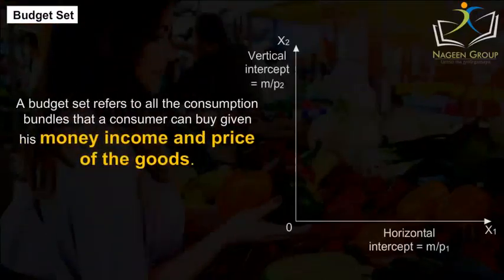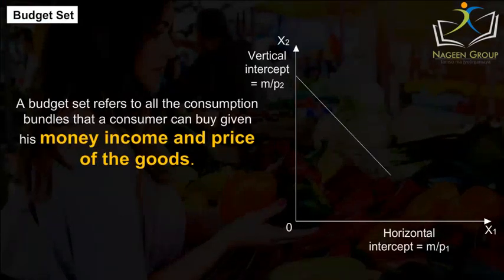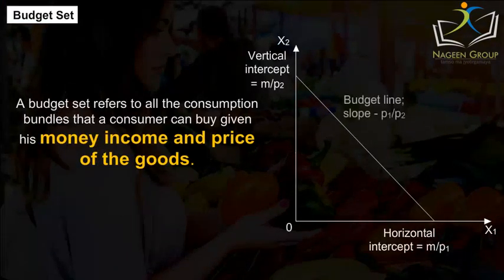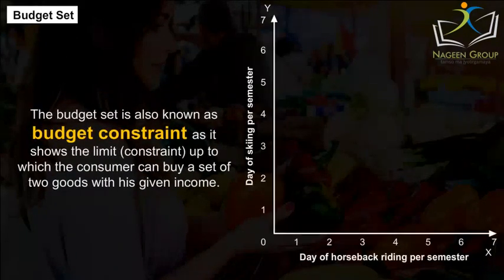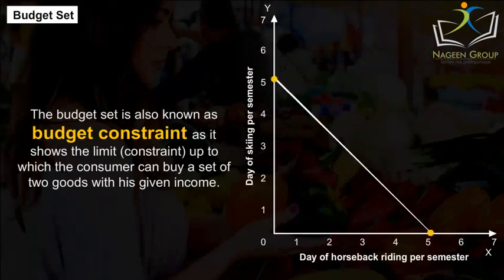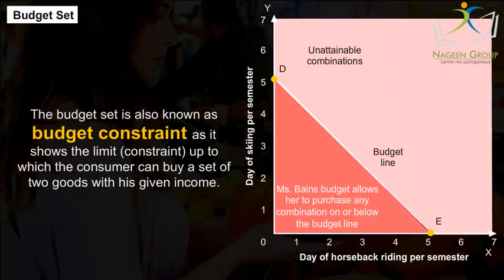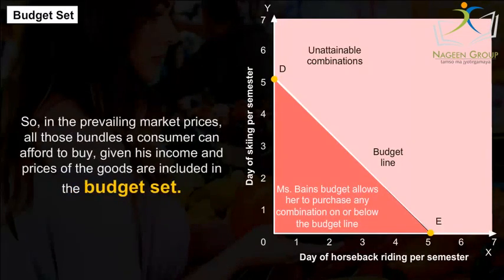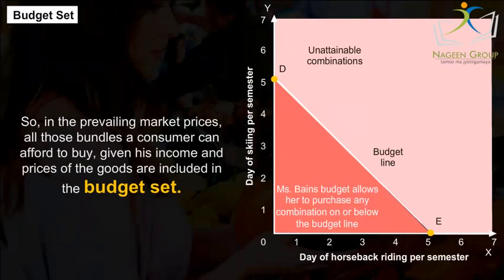A budget set refers to all the consumption bundles that a consumer can buy given his money income and price of the goods. It is constrained by the budget line. The budget set is also known as budget constraint as it shows the limit constraint up to which the consumer can buy a set of two goods with his given income. So in the prevailing market prices, all those bundles the consumer can afford to buy given his income and prices of the goods are included in the budget set.